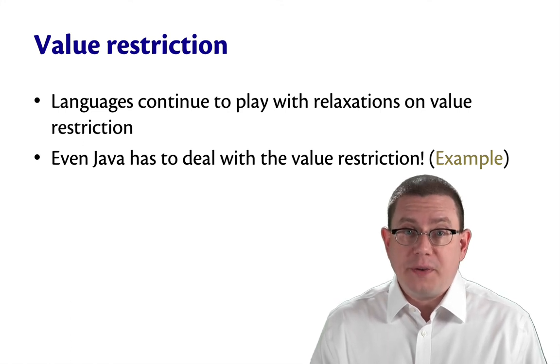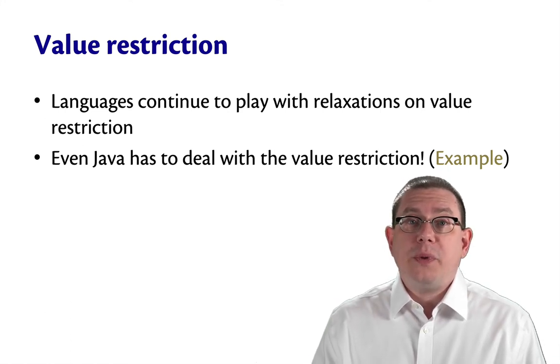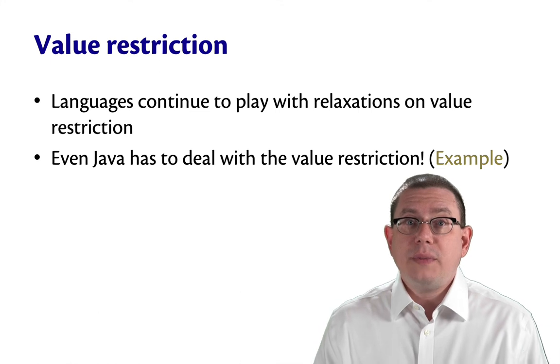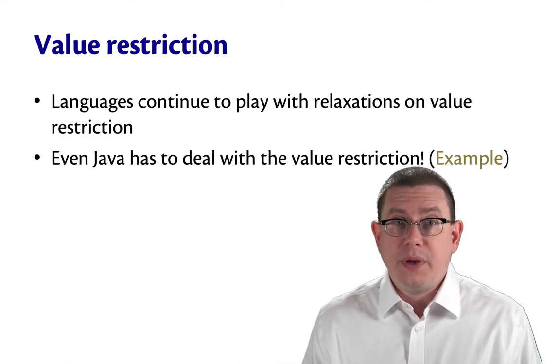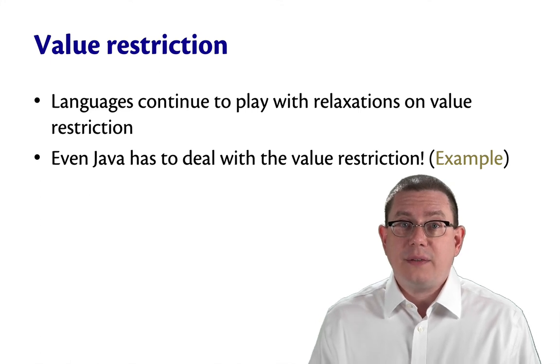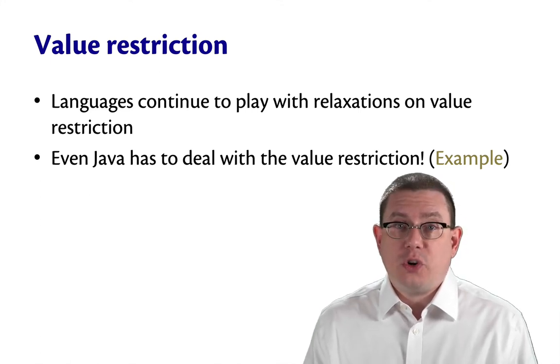We have a mutable polymorphic value. In this case, the mutability comes from the array, and the polymorphism comes from subtype polymorphism, where a class extends another class. But it is the value restriction again, because you're not allowed to change the type of that mutable polymorphic value.